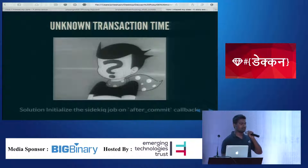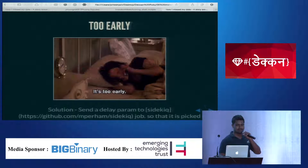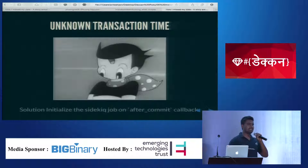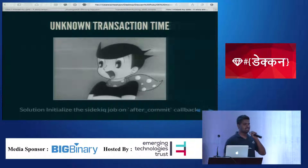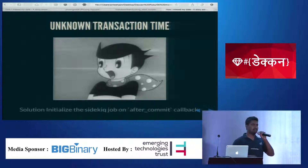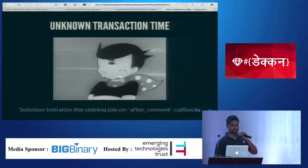This was the fourth problem. To fix the too-early problem, I sent a delayed param to the job — but I don't know what the transaction time would be, so sending any delay param would also fail. Then I tried initializing the job call in after_commit, but that's also a failure: if the deletion of resources fails, the transaction should also fail, which breaks the purpose.